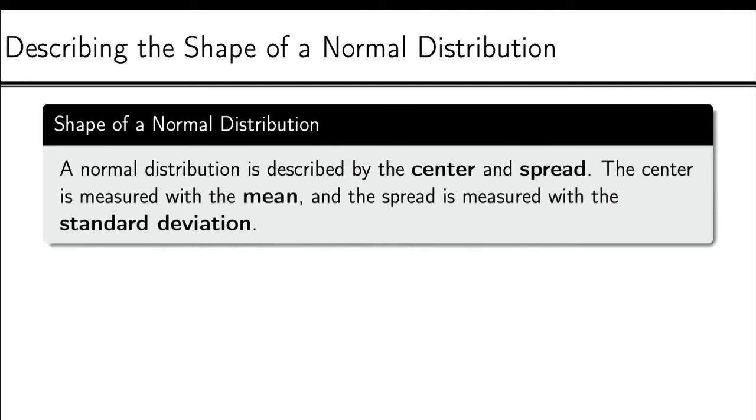So let's talk about what determines the shape of the normal distribution. Every normal distribution is perfectly described by the center and the spread. The center, that's where our peak occurs, and so that center is actually the mean, or mu. And then the spread is measured with the standard deviation, which is sigma. So, mean and standard deviation.